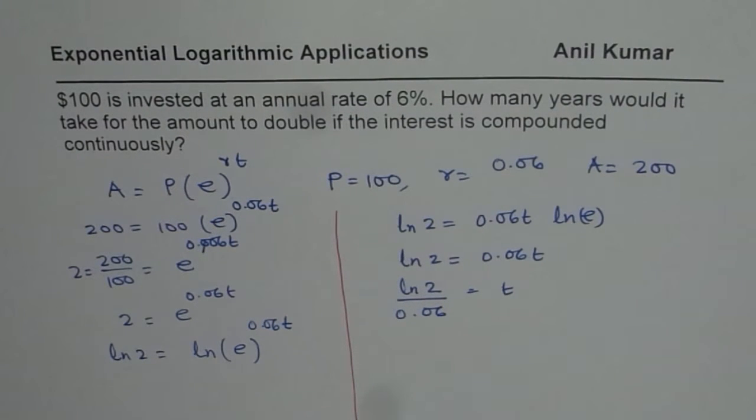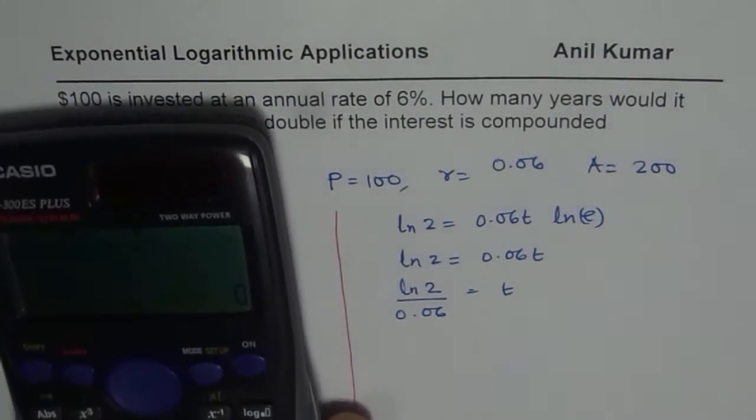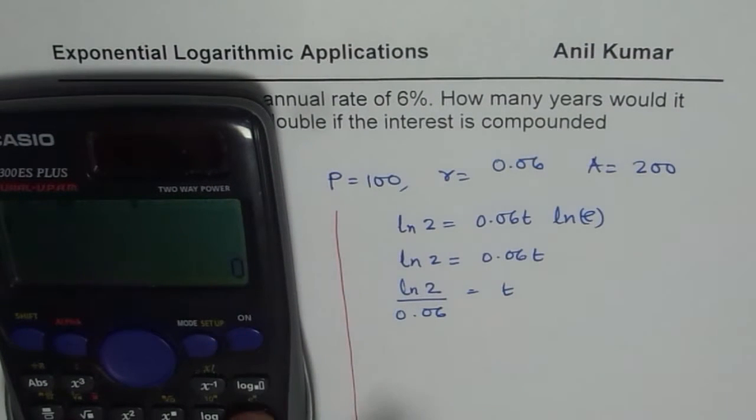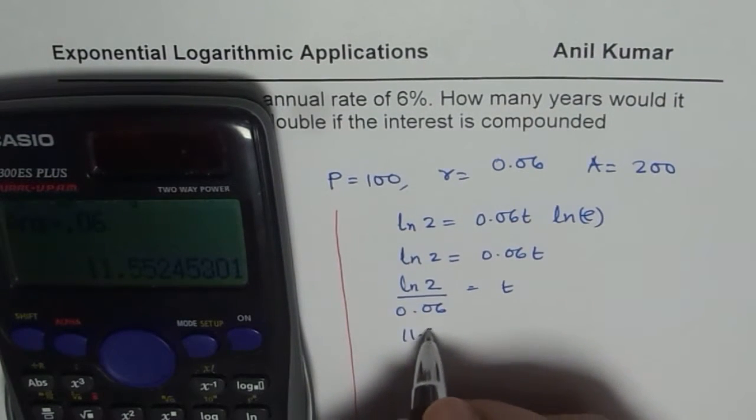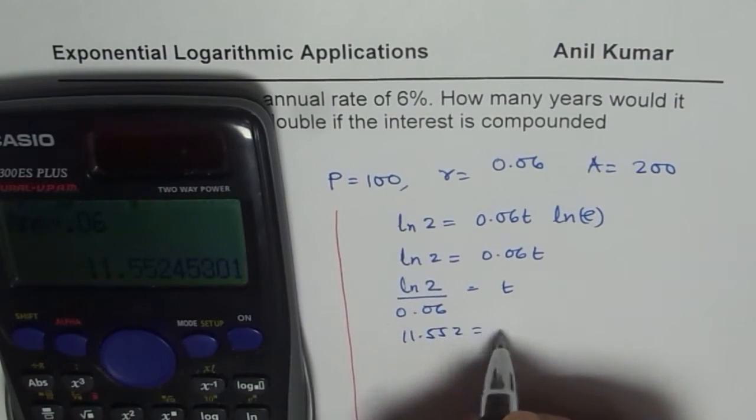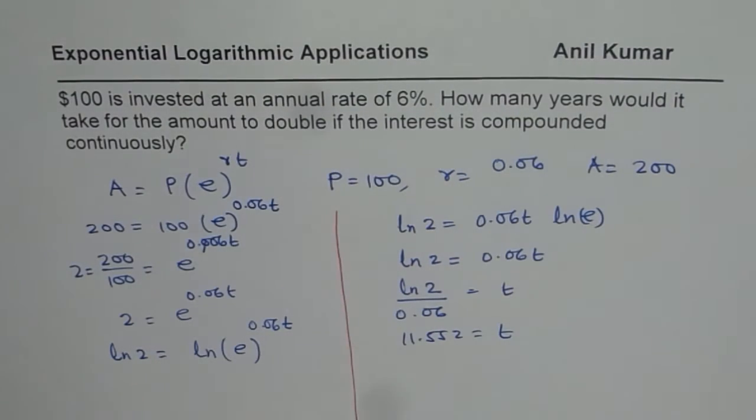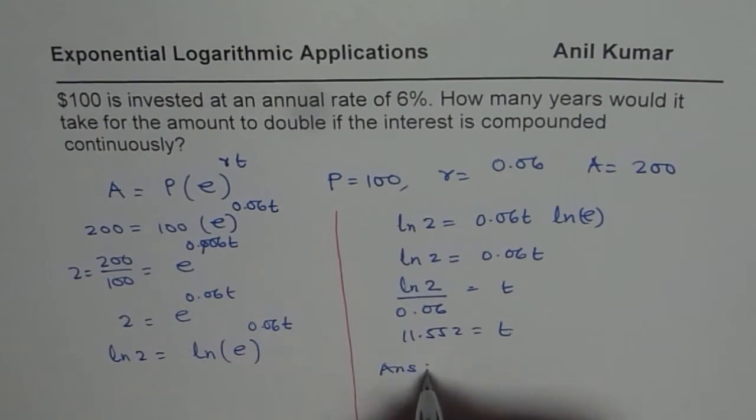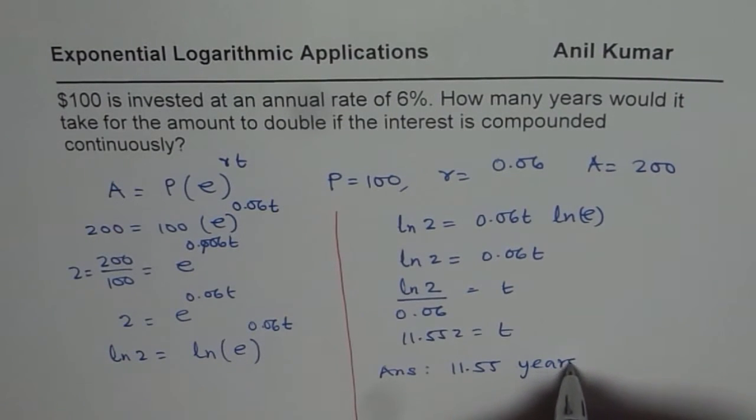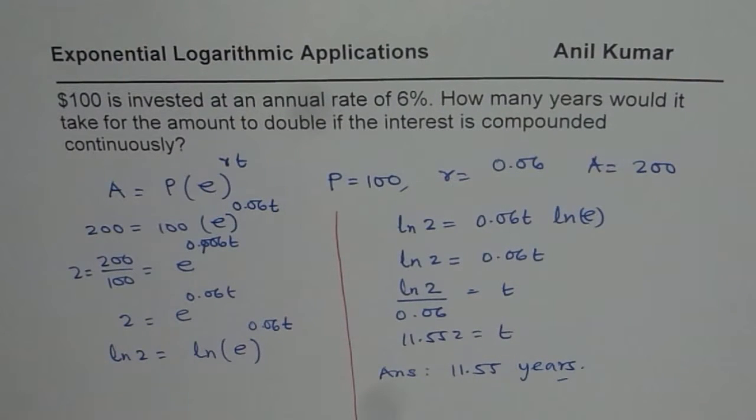At this stage, you can use the calculator and calculate the answer. So we have ln 2 divided by 0.06. So we have 11.552 as t. So how many years? Approximately 11.55 years. So the answer is approximately 11.55 years to double the amount at 6% interest.